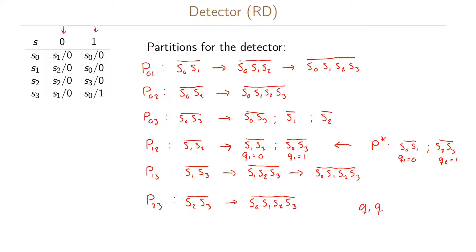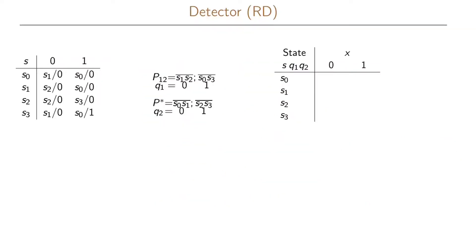So q1 and q2 will be our state assignment. For s1 and s2, q1 = 0; for s0 and s3, q1 = 1; for s0 and s1, q2 = 0; and for s2 and s3, q2 = 1. Let us now fill out the state transition table. Starting with s0: for input 0, we go to s1 encoded as 00 with output 0; for input 1, we go to s0 encoded as 10 with output 0.